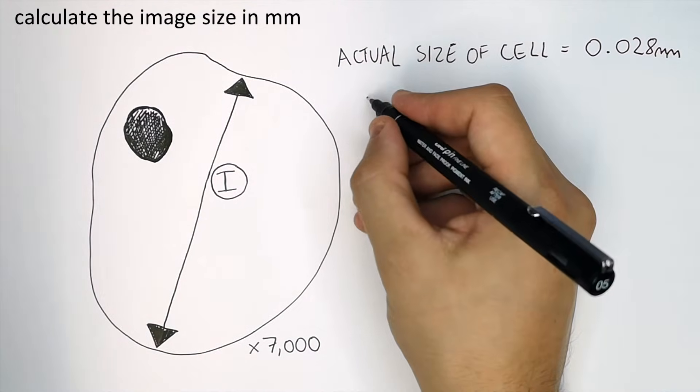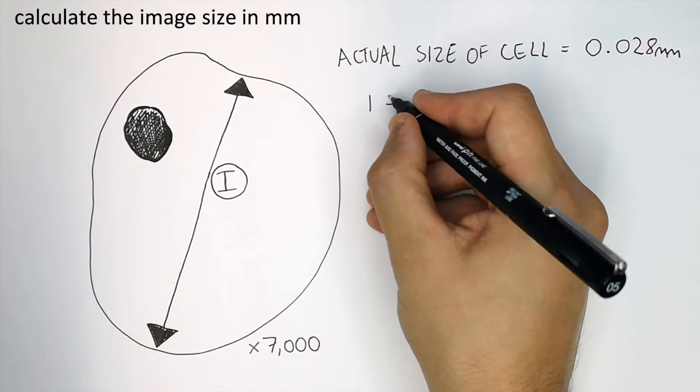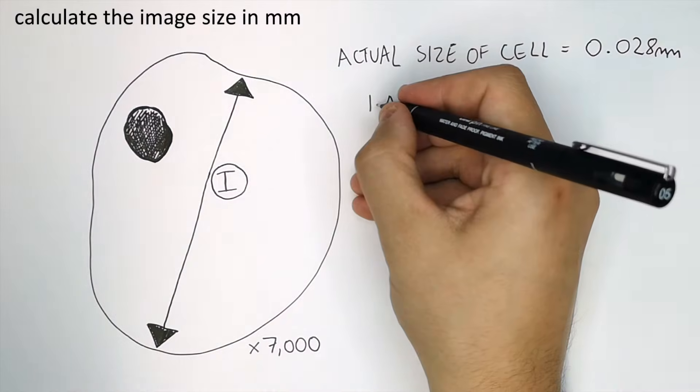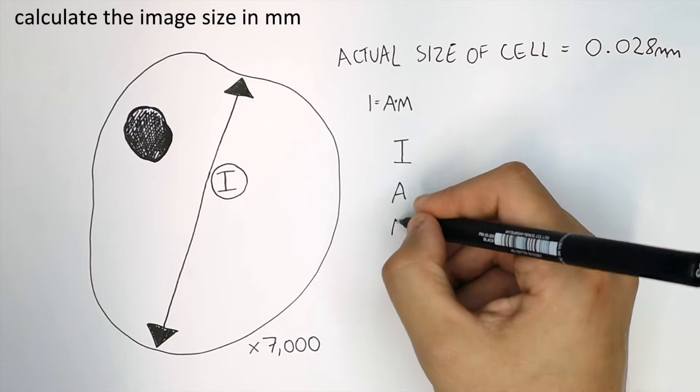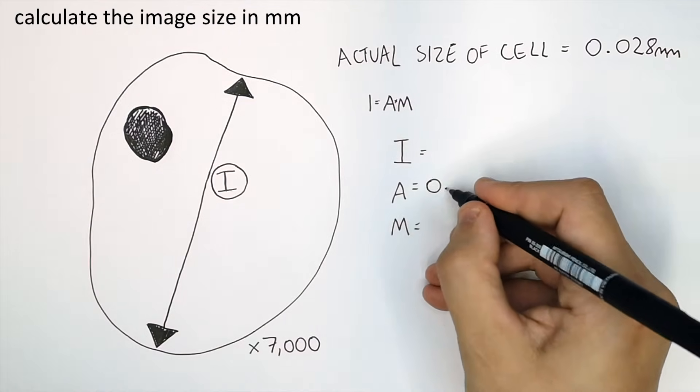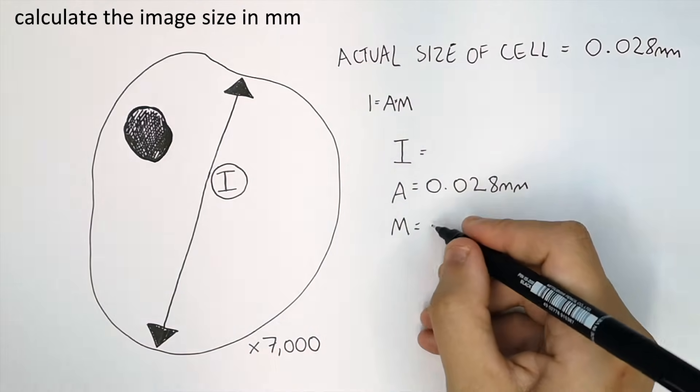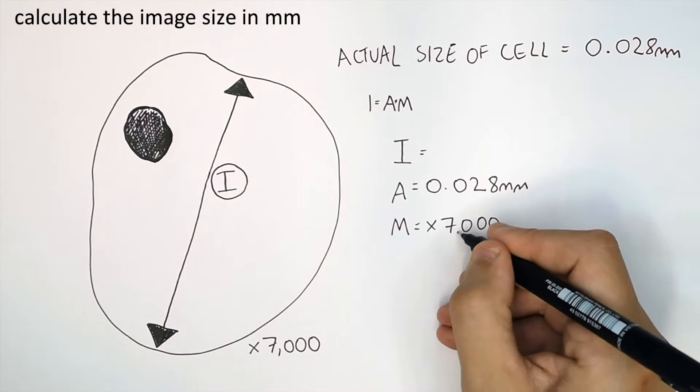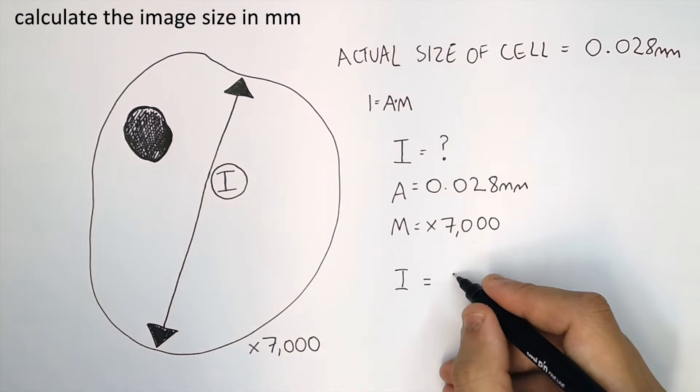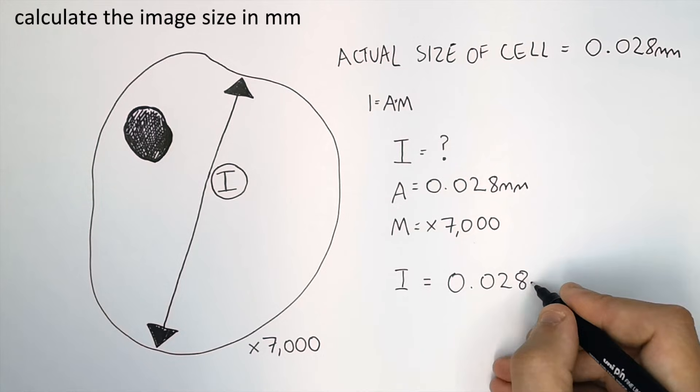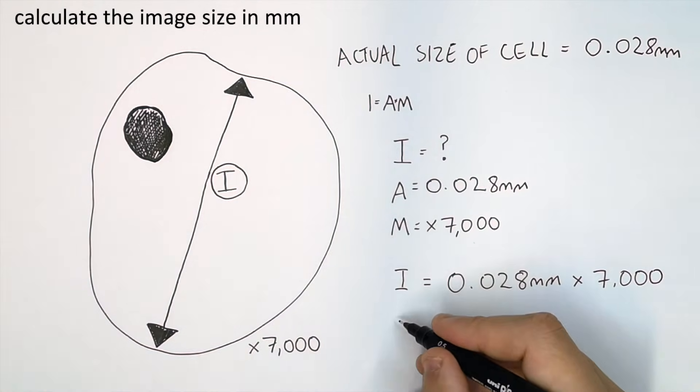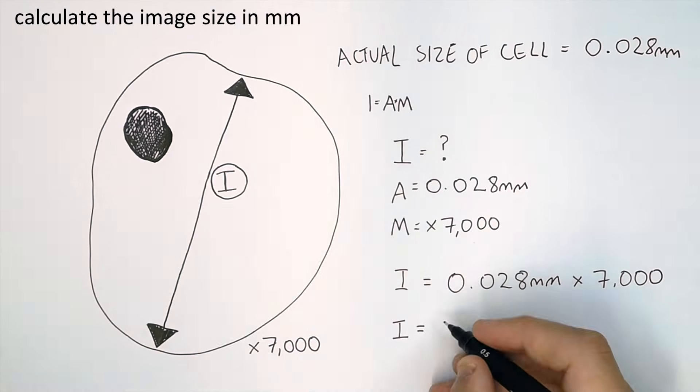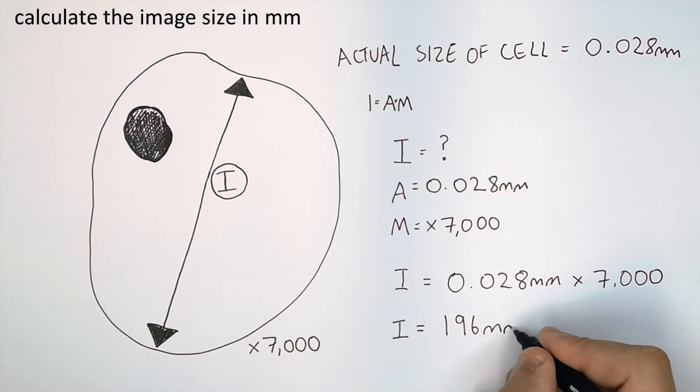Write I, A, M. Put the equals between the I and the A and the times between the A and the M. Fill in what you've got: the actual size and the magnification. Now multiply A times M. So 0.028 millimeters times 7,000 magnification gives you an image size of 196 millimeters.